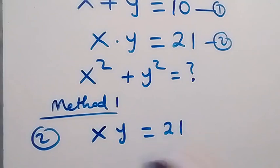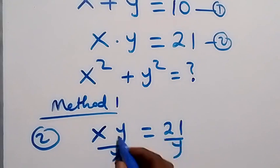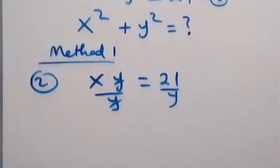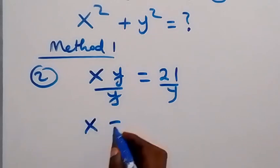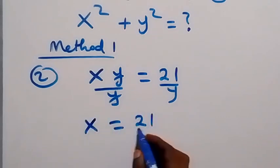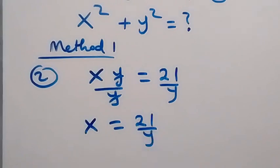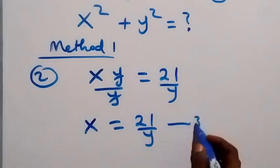From here, we can make x the subject — that is, we divide both sides by y. Y cancels out, and we have x equals to 21 over y. Let's label this as equation 3.